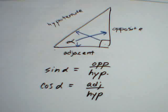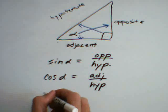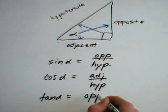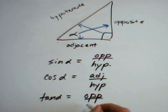And finally, the tangent of the angle is equal to the length of the opposite side from that angle divided by the length of the adjacent side.